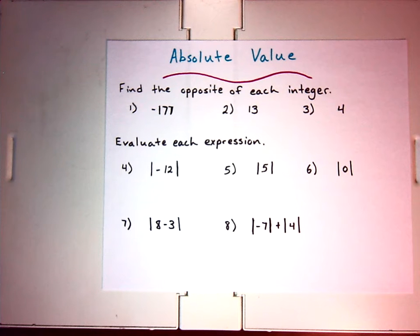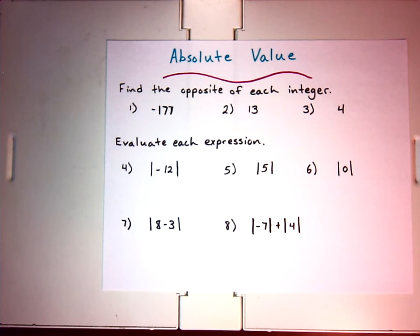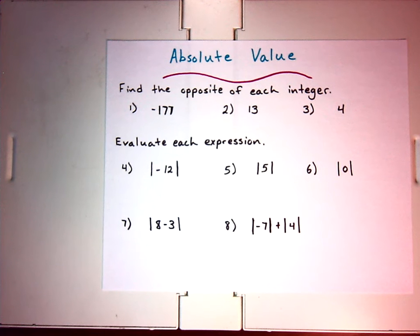Let's use the example of football. If you gain three yards, the distance you are now from the line of scrimmage is three yards. If you lose three yards — that's a negative value — you're still just three yards away from the line of scrimmage from where it was before. So absolute value is always the positive form of the number.